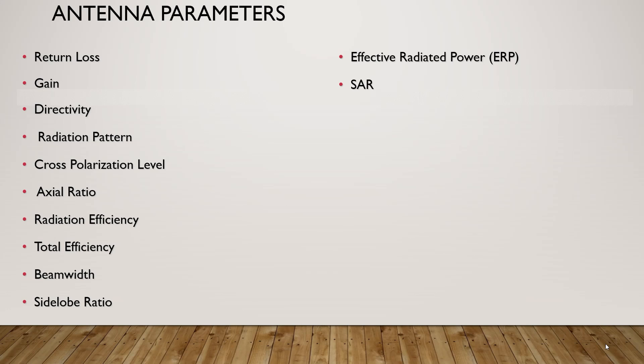Radiation efficiency is a ratio of power radiated by an antenna to the power input to the antenna. It represents how efficiently the antenna converts input power into radiated electromagnetic waves. Total efficiency is the overall efficiency that takes into account both radiation efficiency and the impedance matching efficiency of the antenna. Beam width is an angular separation between two points in an antenna's radiation pattern where the power drops to half, or minus 3 dB, of its maximum value of the main lobe. Side lobe ratio, also known as side lobe level, is the ratio of the power density in the antenna's strongest side lobe to the power density at the peak of the main lobe, usually expressed in dB.